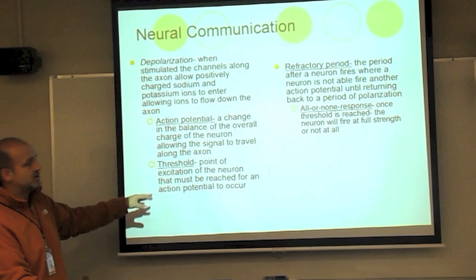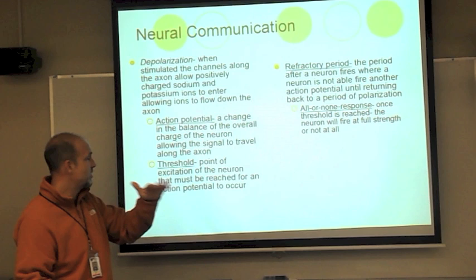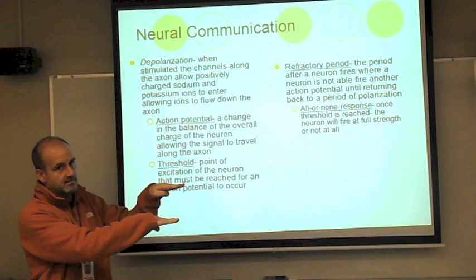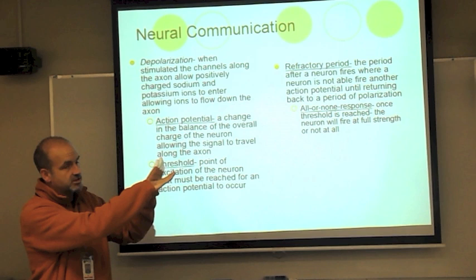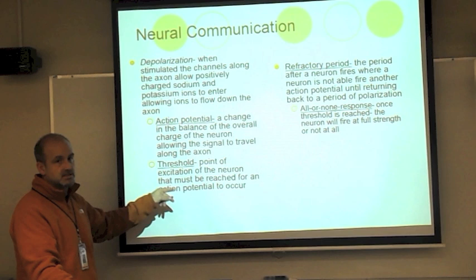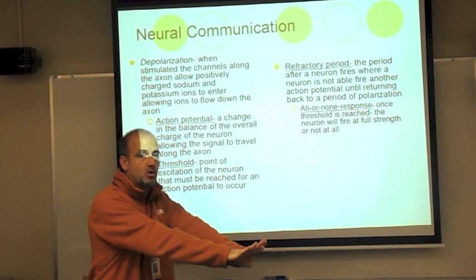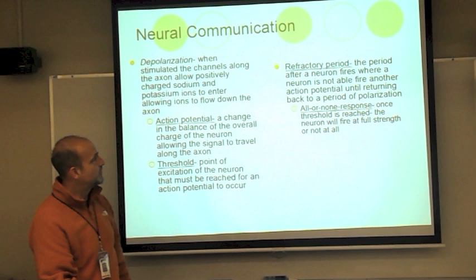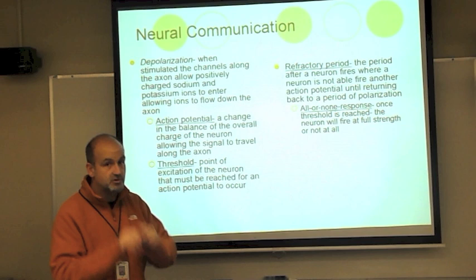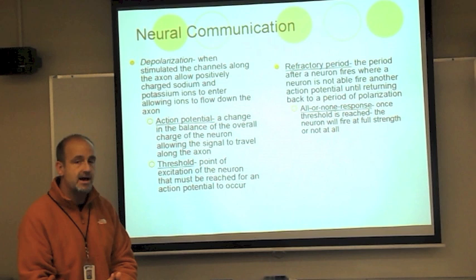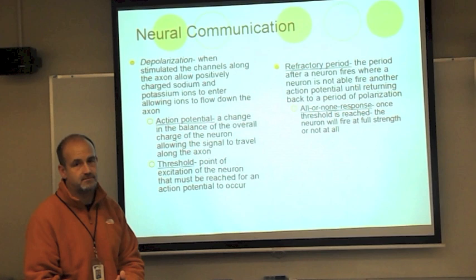Threshold is a point of excitation that has to be met or exceeded — like a line. As the inside of the cell becomes positive through depolarization, once it exceeds this line, it will launch and fire an action potential. Once the gate is open and the line is crossed, that push — the action potential — sends the message down the axon. After an action potential occurs, after a neuron fires and the message goes down the axon, the neuron goes into a refractory period — a time during which the neuron cannot fire.